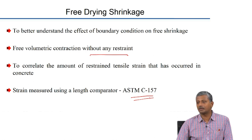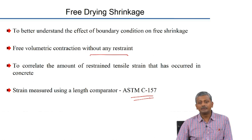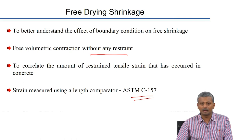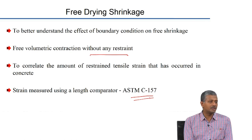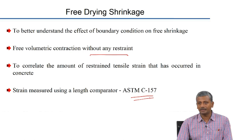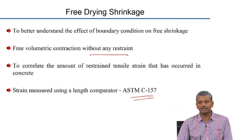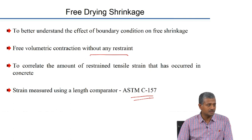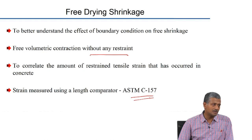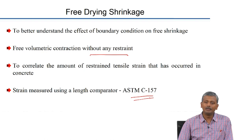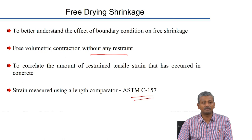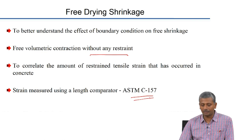This is a standard methodology; most codes have a similar methodology. It is not complicated — you need to prepare prismatic specimens and store them in regular moist curing conditions until the age at which you want to start drying exposure. There is no predetermined age; you can decide based on your site conditions. In some cases you can cure for 7 days, in others for 28 days. Beyond that, you expose the specimens to a drying environment, typically at 50% relative humidity, and monitor the length change periodically.